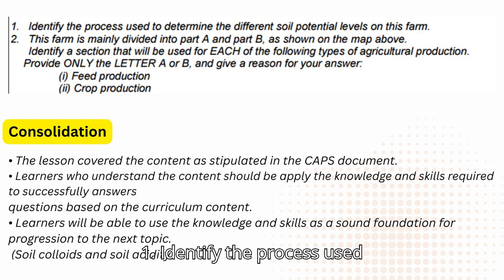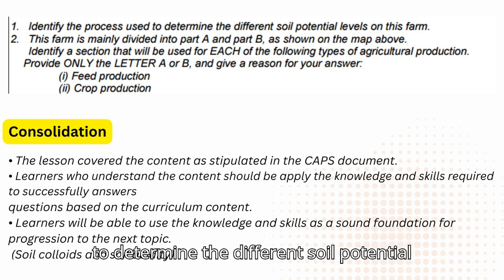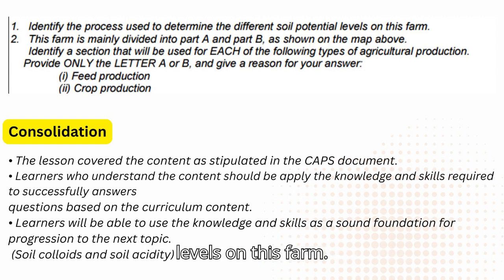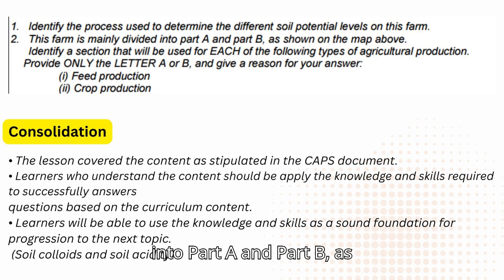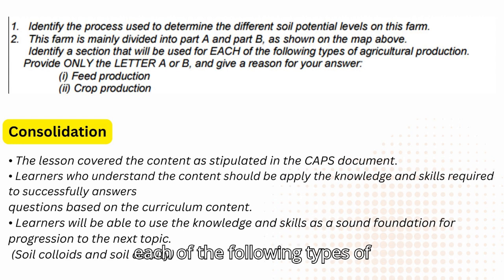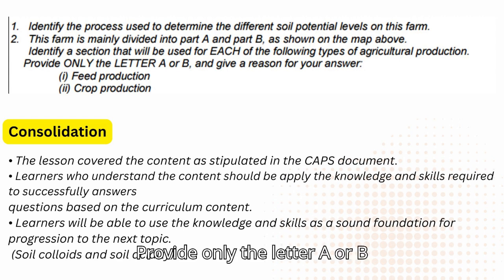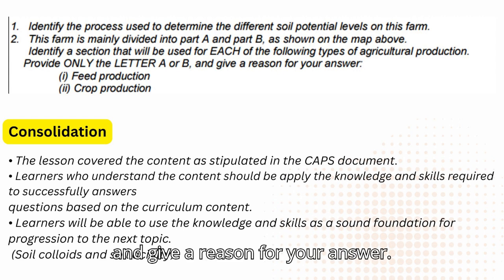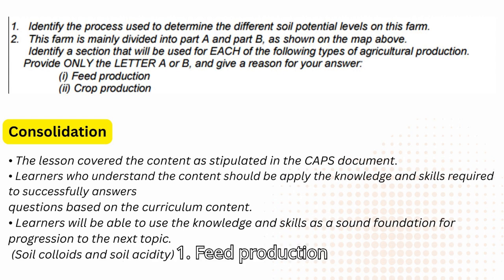Question 1: Identify the process used to determine the different soil potential levels on this farm. Question 2: This farm is mainly divided into Part A and Part B as shown on the map. Identify a section that will be used for each of the following types of agricultural production — provide only the letter A or B and give a reason for your answer: (1) Feed production, (2) Crop production.